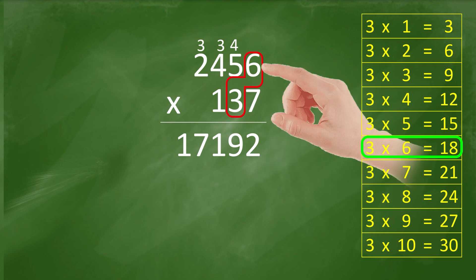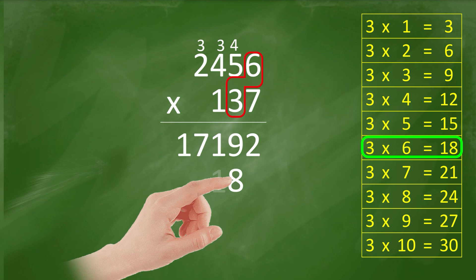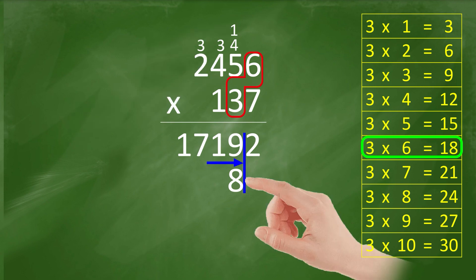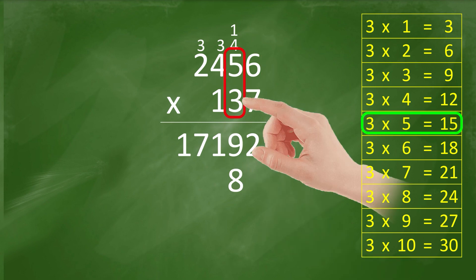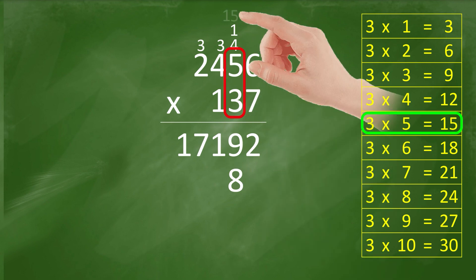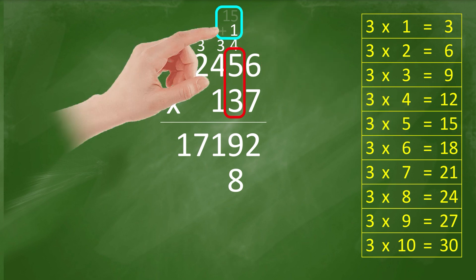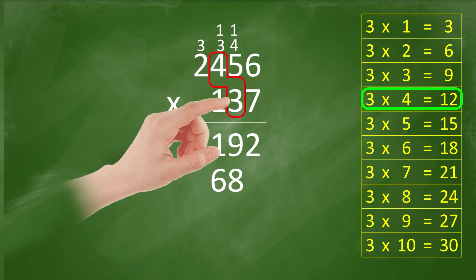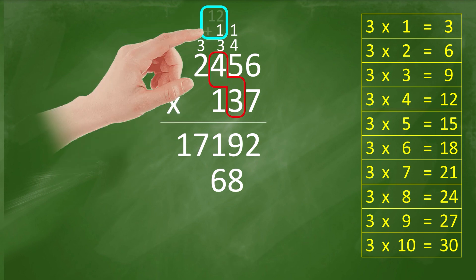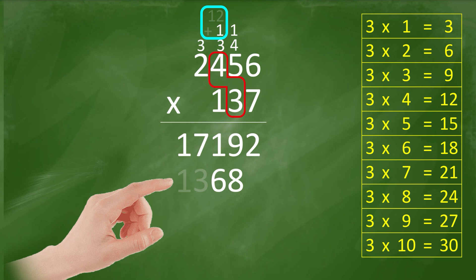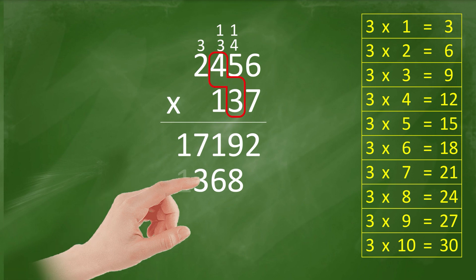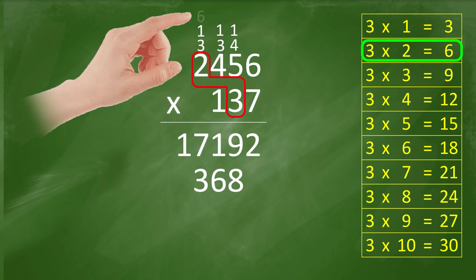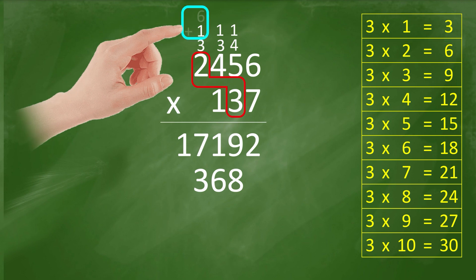3 times 6 equals 18 — 8 stays, carry 1. Remember, your answer must align here this time. 3 times 5 equals 15, plus 1 equals 16 — 6 stays, carry 1. 3 times 4 equals 12, plus 1 equals 13 — 3 stays, carry 1. 3 times 2 equals 6, plus 1 equals 7.